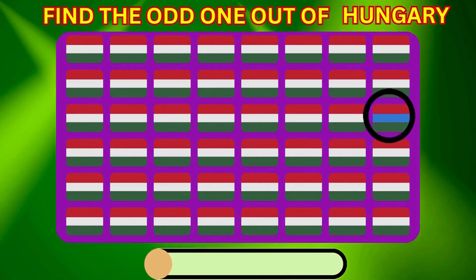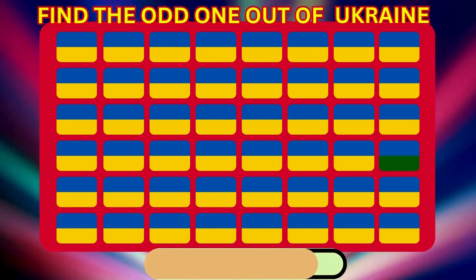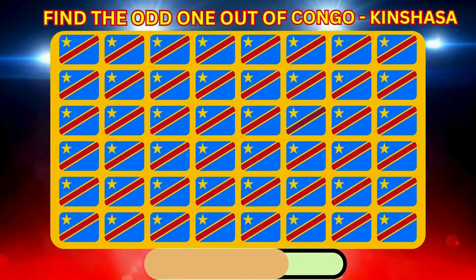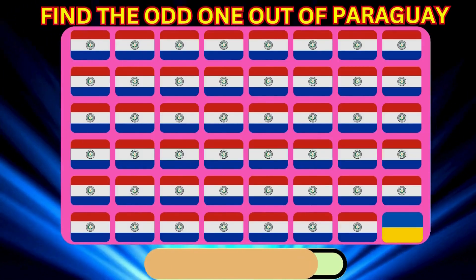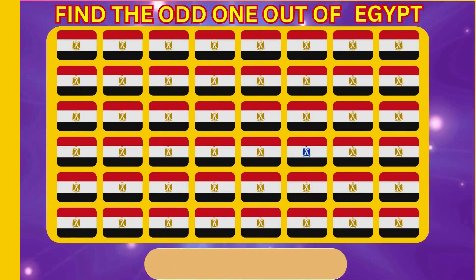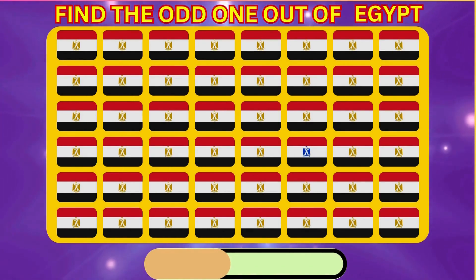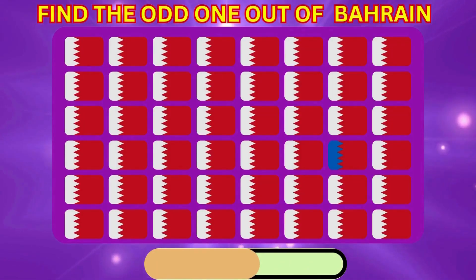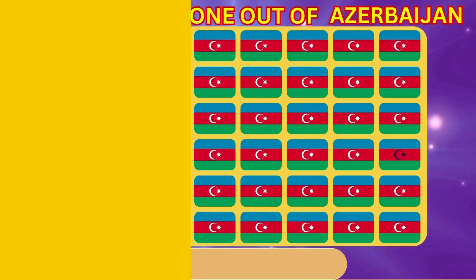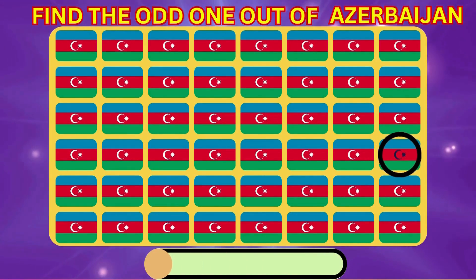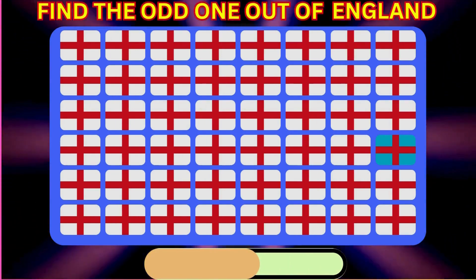Find the Odd One Out of Hungary. Find the Odd One Out of Ukraine. Find the Odd One Out of Congo. Find the Odd One Out of Paraguay. Find the Odd One Out of Ukraine. Find the Odd One Out of Azerbaijan. Find the Odd One Out of India.